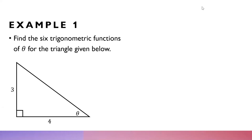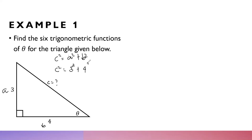Example 1: Find the six trigonometric functions of theta for the triangle given. The hypotenuse is unknown, so let us find it first. Suppose this is A, this is B, and this is C. Using the Pythagorean theorem, C squared equals A squared plus B squared. With A equal to 3 and B equal to 4: C squared equals 9 plus 16 equals 25. Taking the square root of both sides, C equals 5. So the hypotenuse is 5.